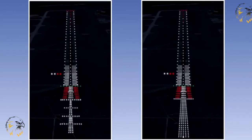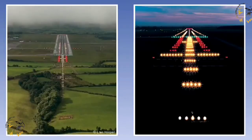At those aerodromes where CAT2 and CAT3 approaches are conducted, all complex approach lighting systems are installed to enhance the ability of pilots to achieve the visual criteria needed to complete a landing. You will find many variations of this kind of lighting, but they are all based upon the Calvert 5-bar and centreline or ICAO barrette lighting systems. All systems are distance coded and give some elements of attitude information.